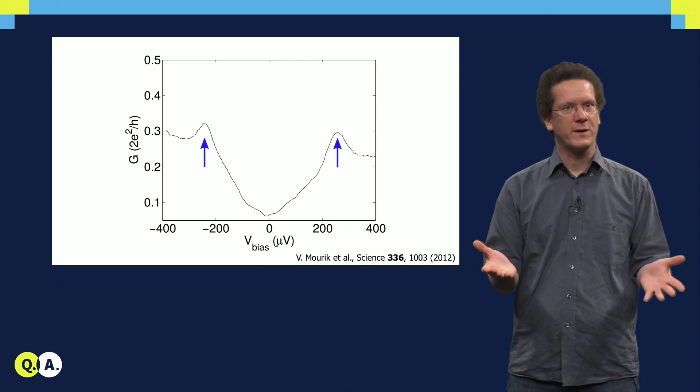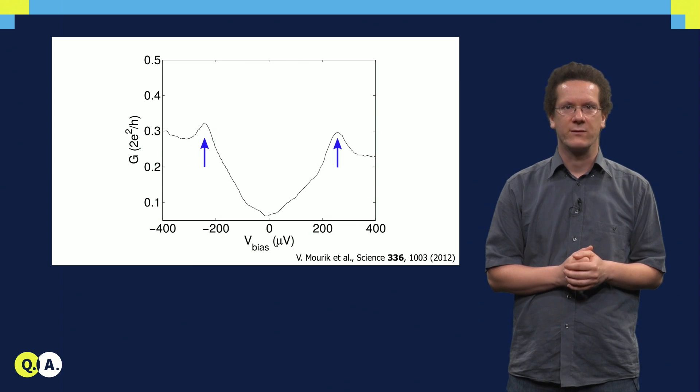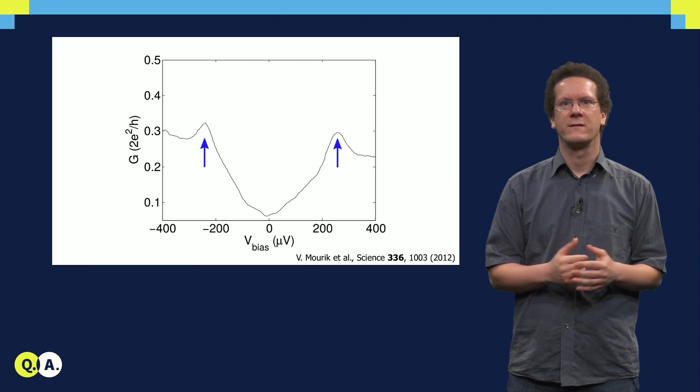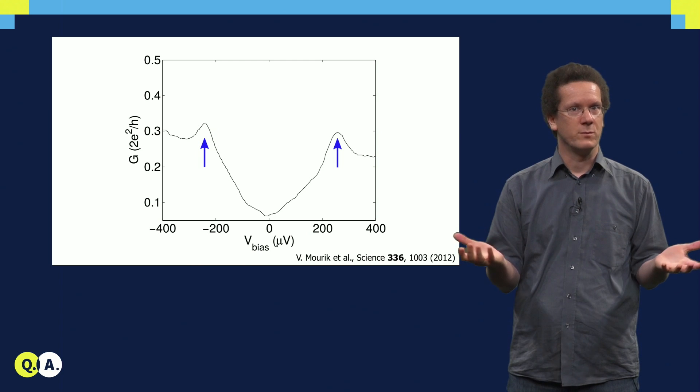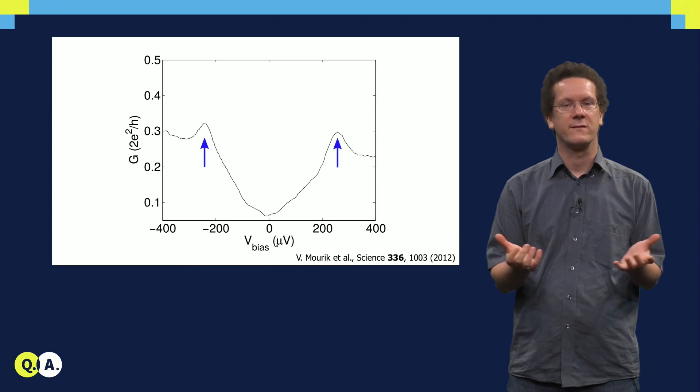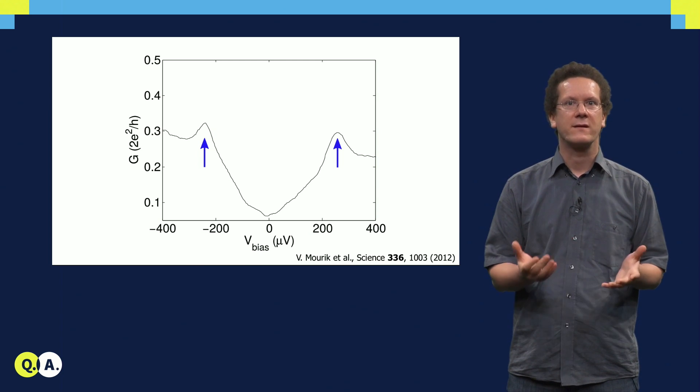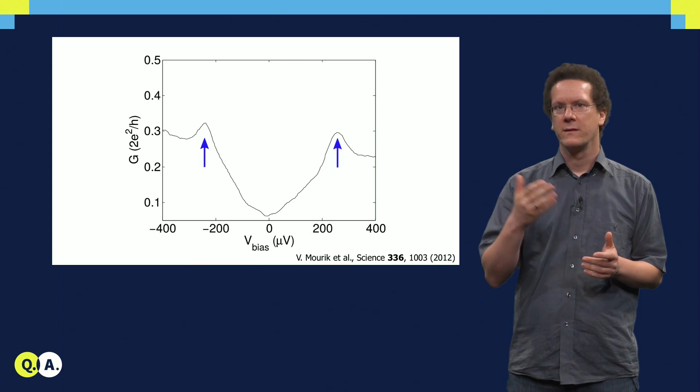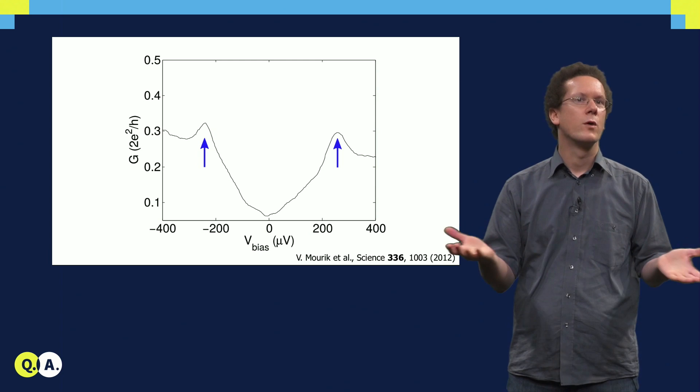Now, this particular measurement was done in 2012 in Delft. I show here the result of what they found for the conductance at zero magnetic field. We see the gap structure that I explained to you before, a suppressed conductance inside the gap, and conductance peaks at the value of the induced superconducting gap. This was first at zero magnetic field, so no Majoranas.